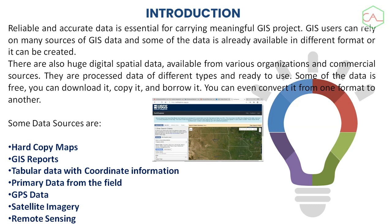There are various sources of data. First, we can source data from hard copy maps — most of the data used in an ArcGIS environment is digitized from hard copy maps. You can get data from GIS reports, from tabular coordinate information gathered from GPS, from primary data collected from the field, and also from satellite imagery and remote sensing imagery. There are various ways this data can be obtained.